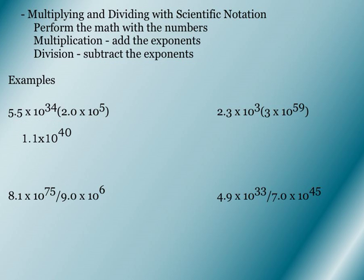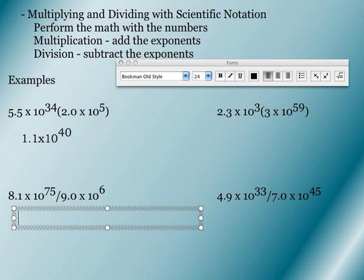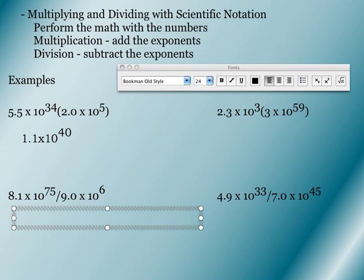Making sure you can get that with your calculator. And then we'll do one more, we'll do a division just because sometimes people have issues with the division. 8.1 to the 75th divided by 9 to the 6th. And you should be able to get 9.0 times 10 to the 68th.